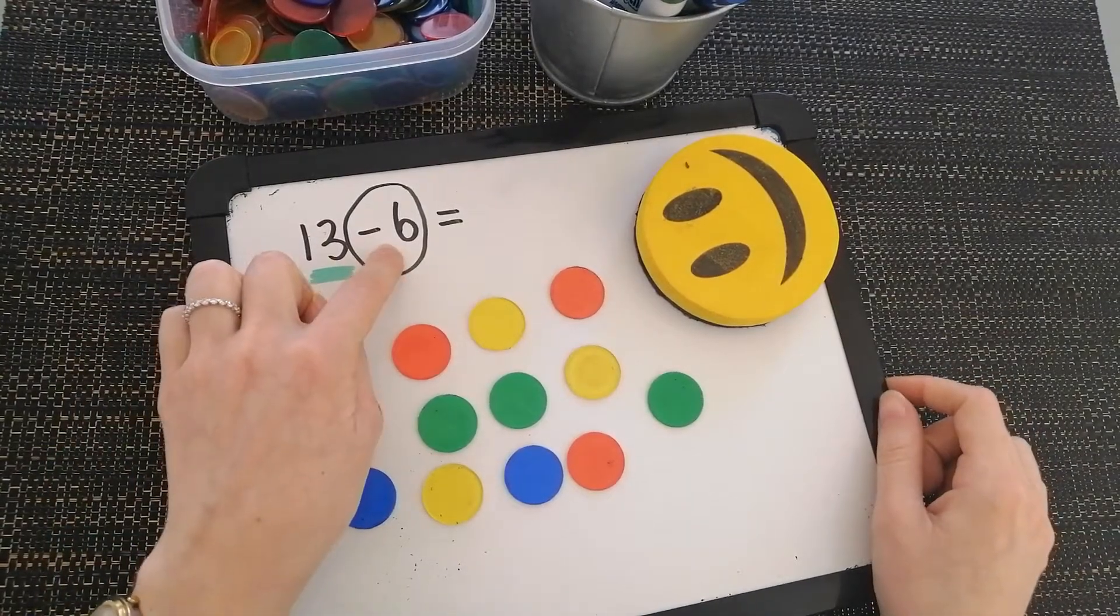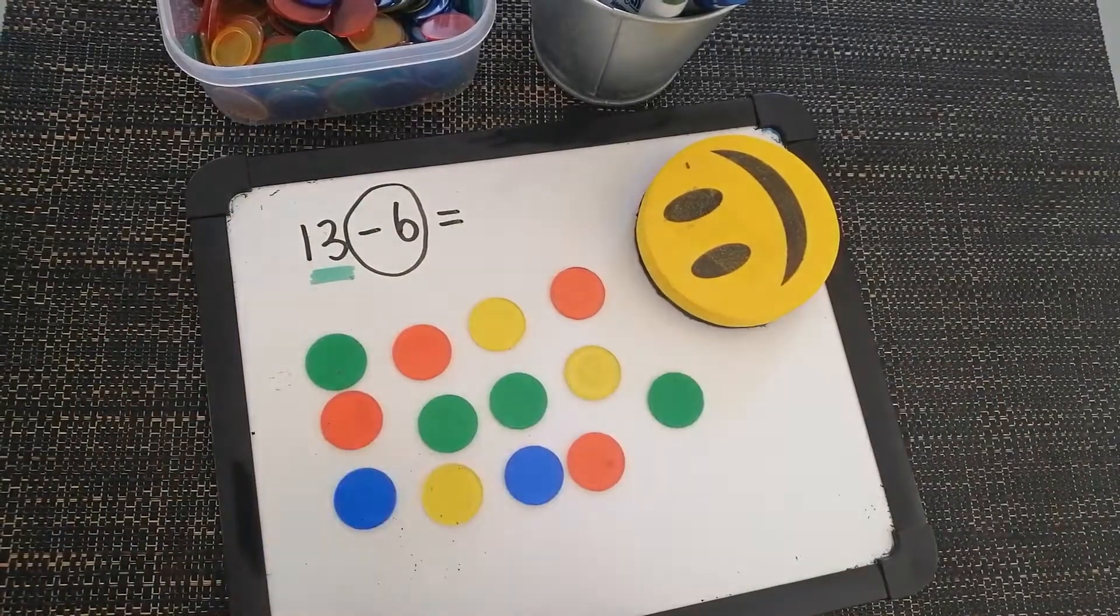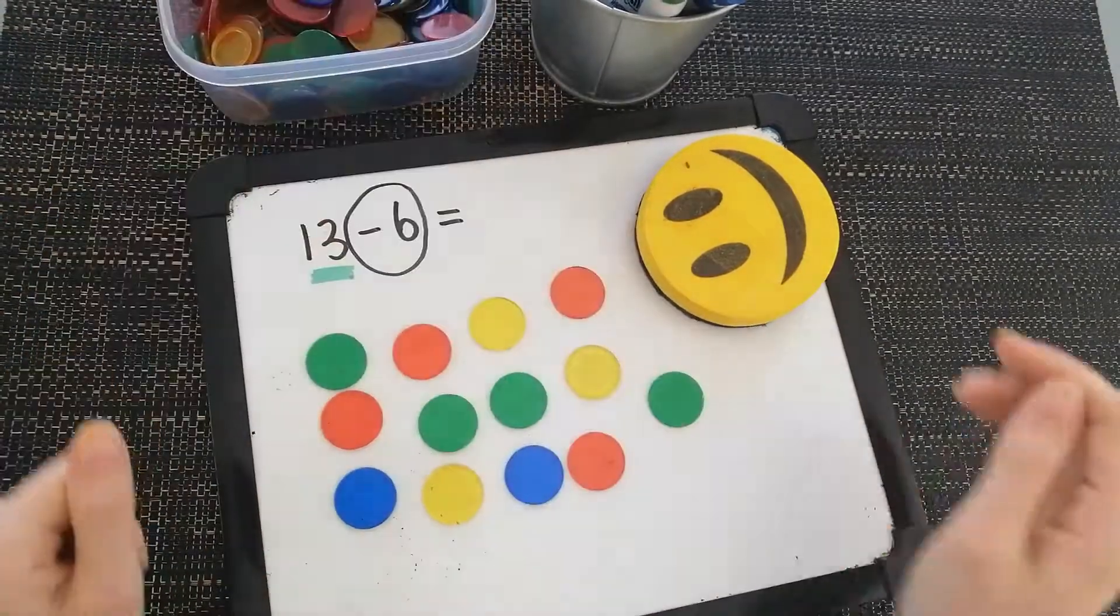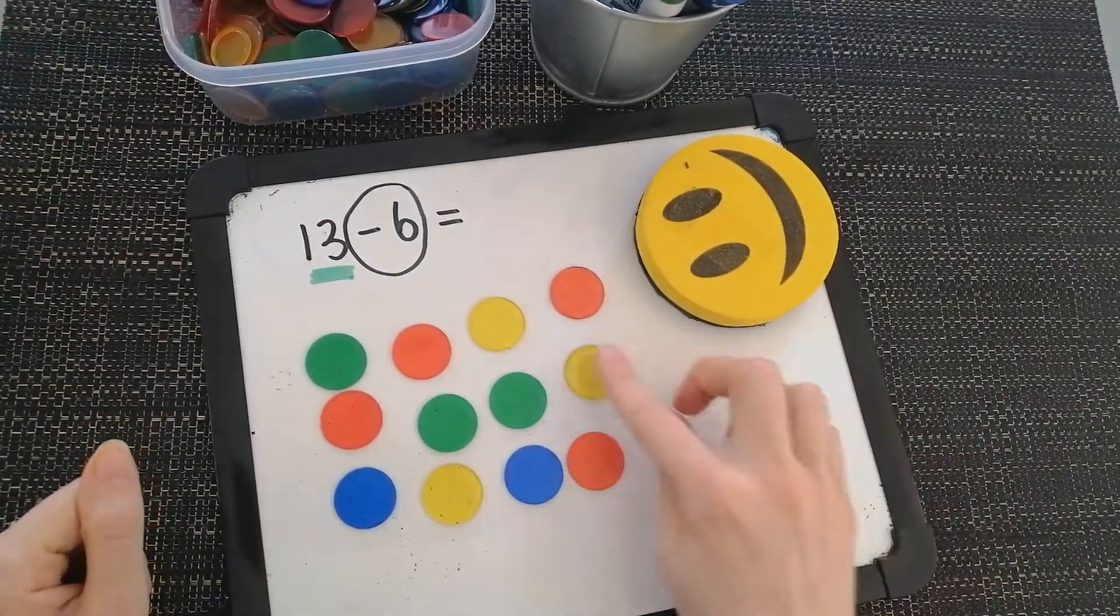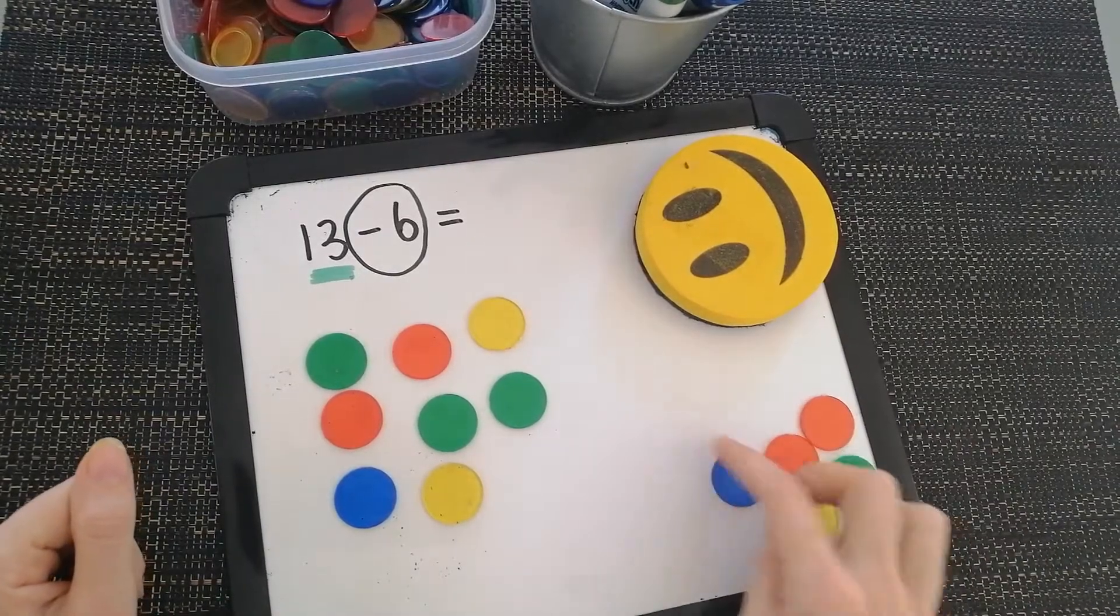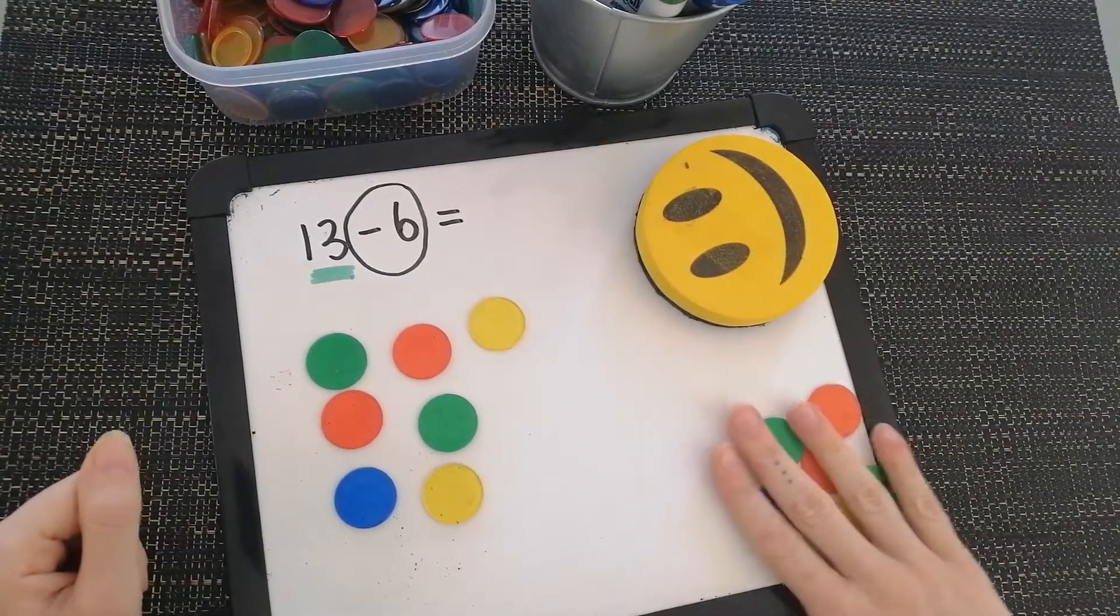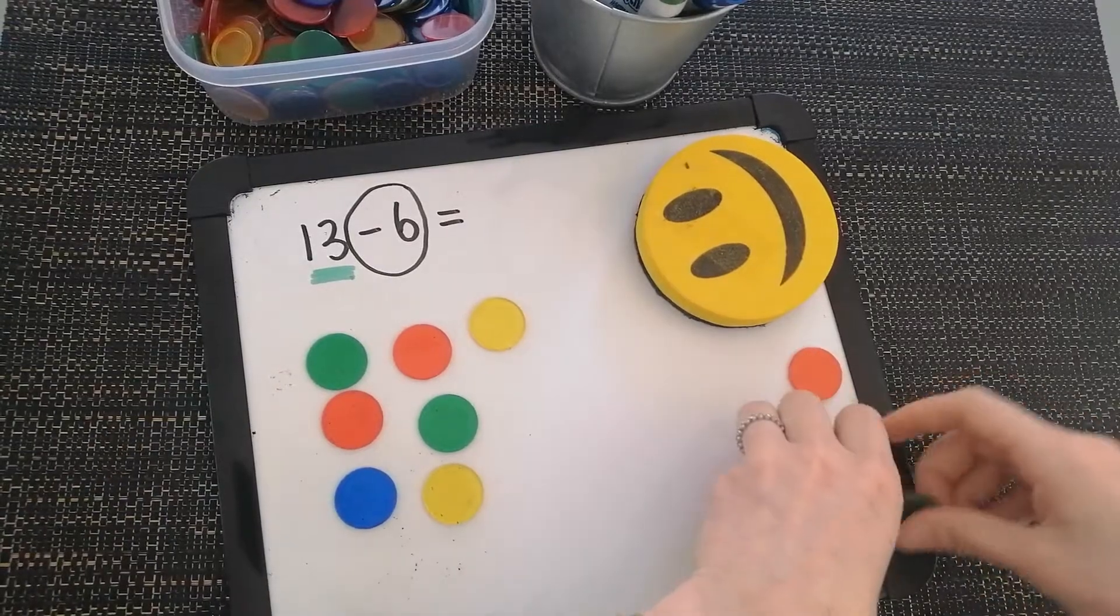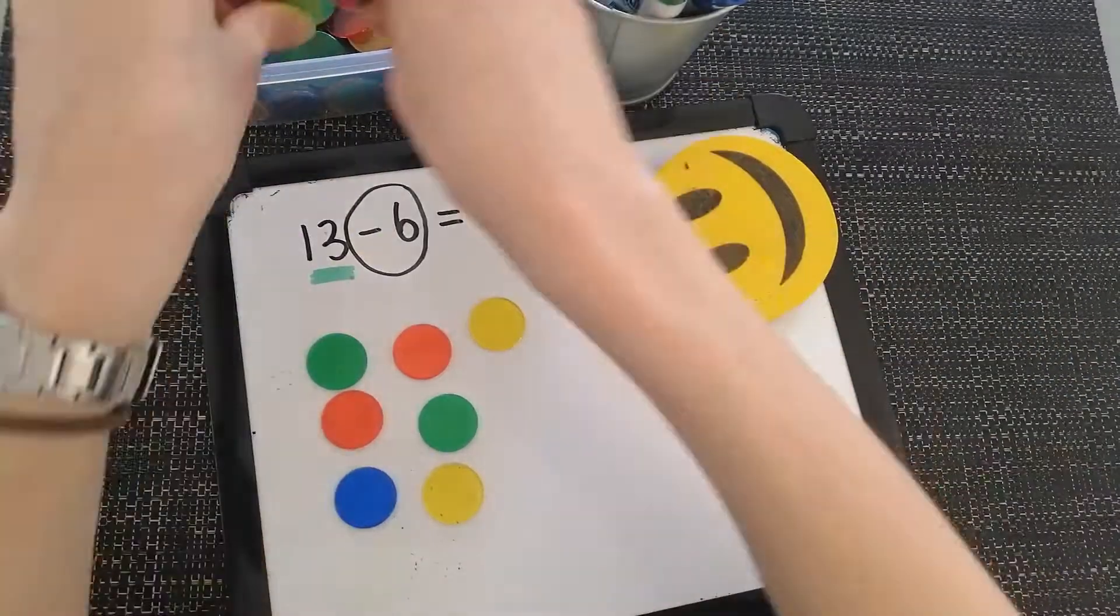Now I need to take away 6 of them. I need to pick up 6 of these counters and put them back. So I have 1, 2, 3, 4, 5, 6. I've pushed them all the way to the side or you might even pick them up and put them away so that you do not get confused.